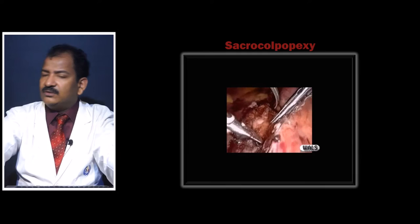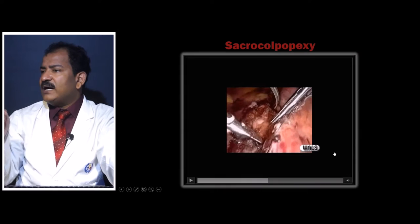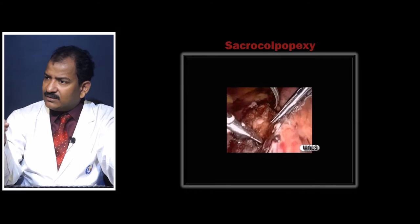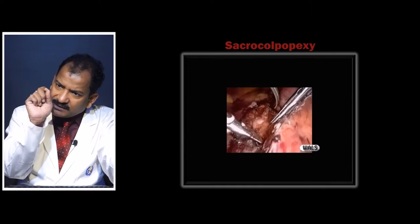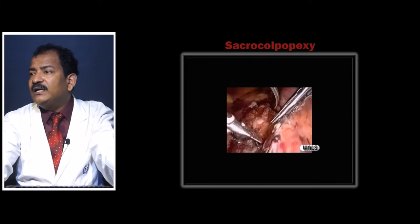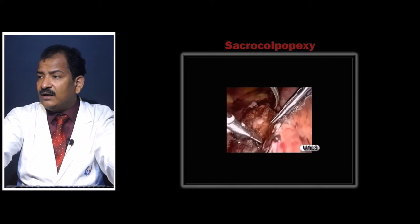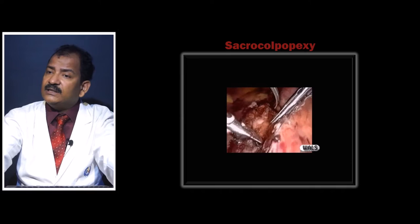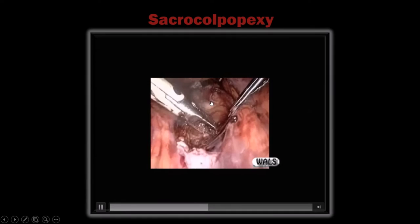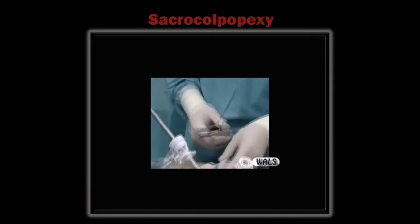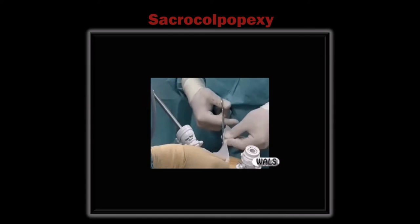If you do not have experience dealing with vessel injury, avoid taking deep bites. Puncture site closure of an iliac vessel is difficult because blood obscures vision — immediate conversion is required. Now, the sacral promontory and anterior longitudinal ligament are identified. The mesh is 30 centimeters long and 3 centimeters wide, split in the center to make a Y-shape, just like a child's clip-on tie — ready to be passed through the paracervical windows.